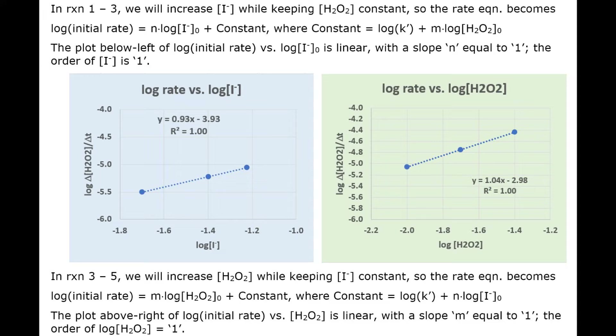Then in several more experiments, the concentration of iodide was kept constant and the concentration of peroxide was varied. The graph on the right shows the plot of the log of the rate of decrease of peroxide in solution versus the log of the peroxide concentration, which is also quite linear.